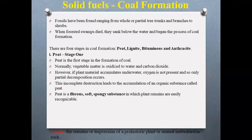Coal is a major fuel used for thermal power plants to generate steam. Coal occurs in nature, formed by the decay of vegetable matter buried under the earth millions of years ago under pressure and heat. It takes around 325 million years to form coal. This phenomenon of transformation of vegetable matter into coal under the earth's crust is known as metamorphism. The type of coal available depends upon the period of metamorphism.